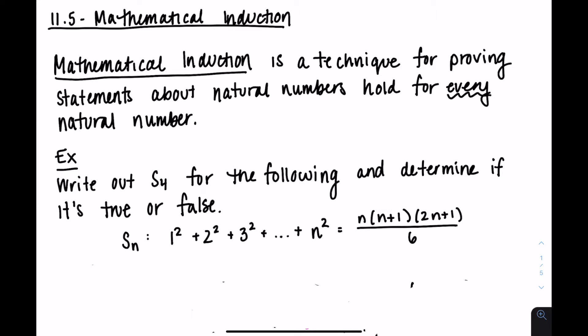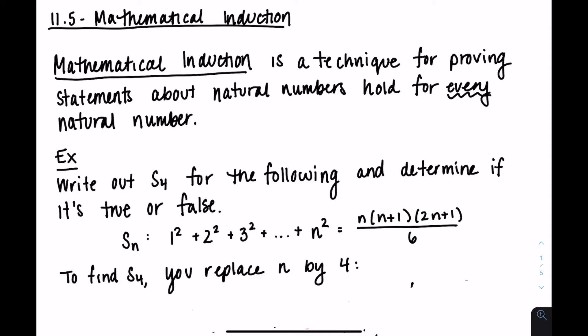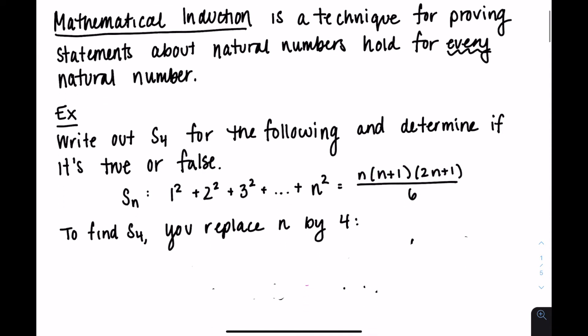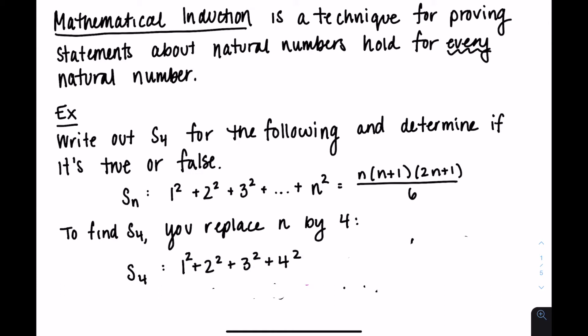We're given a statement and we want to write what S4 is and determine if it's true or false. When you have S(N), you take 1 squared plus 2 squared plus 3 squared all the way up to N squared. So S1 is just one term, S2 would be two terms, S3 would be three — you add another term each time. To get S4, you replace N by 4, so you go up to 4 squared.